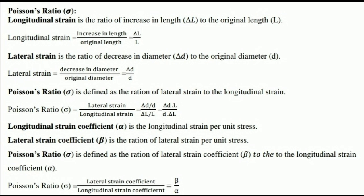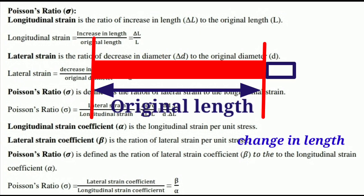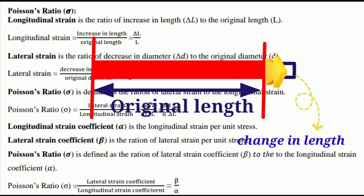Poisson's ratio is denoted as sigma. Before understanding it, we must know the difference between longitudinal strain and lateral strain. Longitudinal strain is the ratio of change in length to original length — that is, ΔL divided by original length L. If we apply a force to one end of a body, we can observe the change in length due to the applied force; this is longitudinal strain.